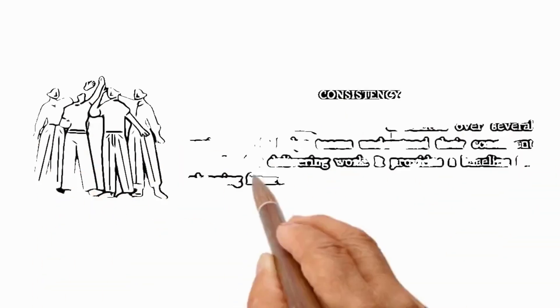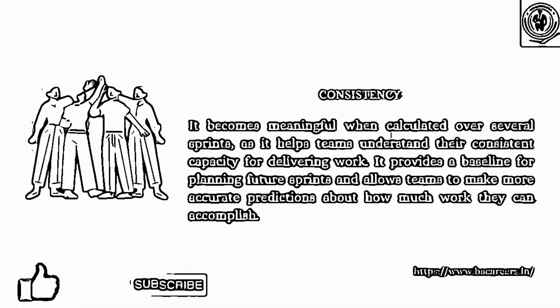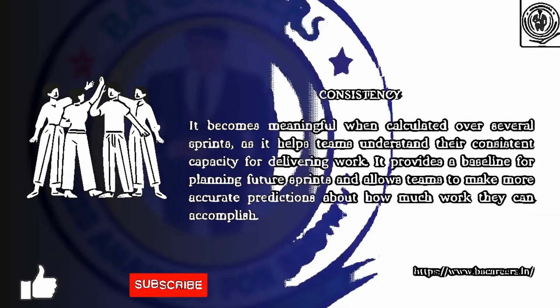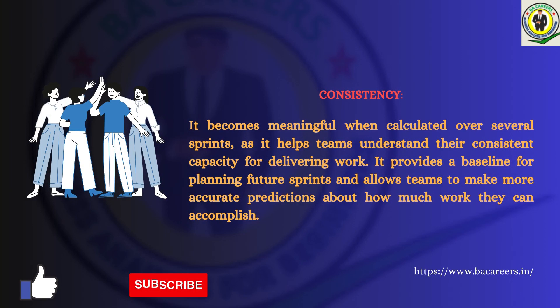Consistency: Velocity becomes meaningful when calculated over several sprints, as it helps teams understand their consistent capacity for delivering work. It provides a baseline for planning future sprints and allows teams to make more accurate predictions about how much work they can accomplish.